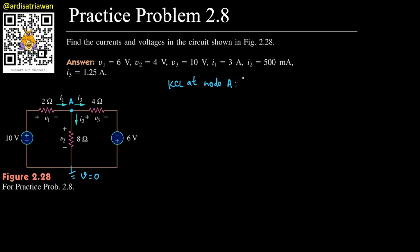Now let's do KCL at node A. KCL says that the sum of the currents that goes in will equal to the sum of the currents that goes out. The current that goes in is just this i1, so that will equal to i2 plus i3.